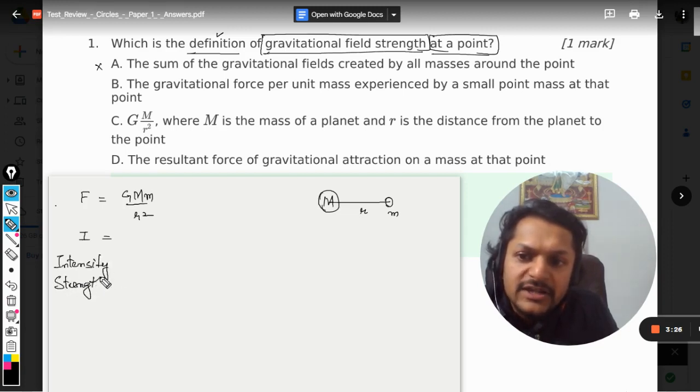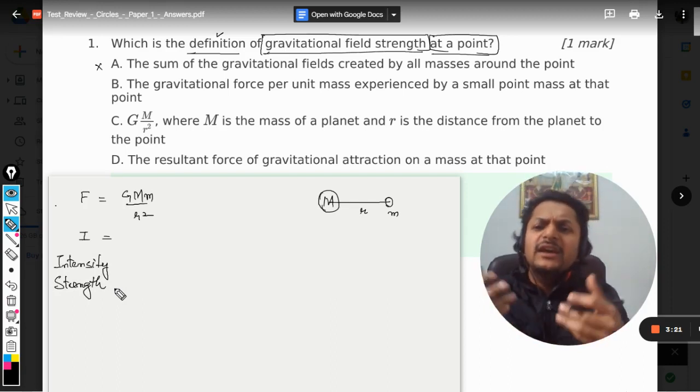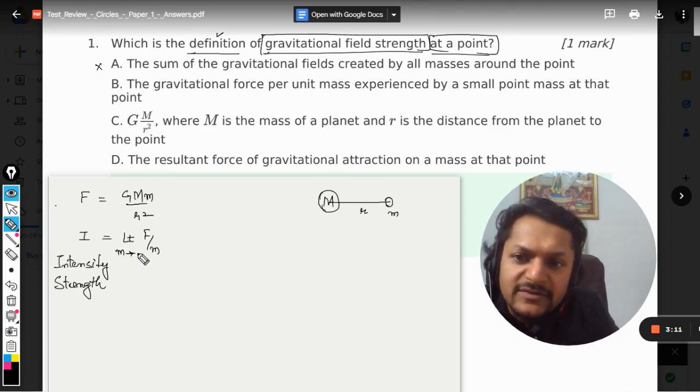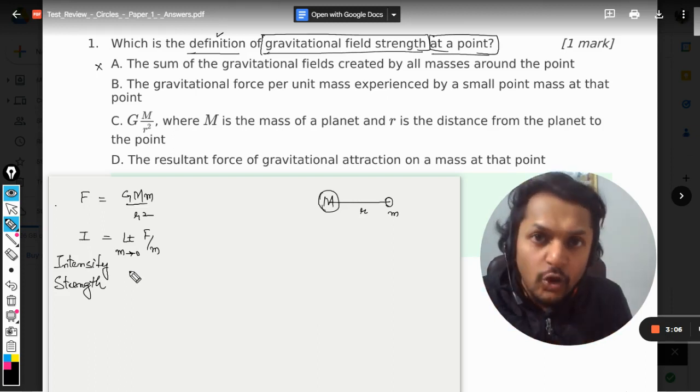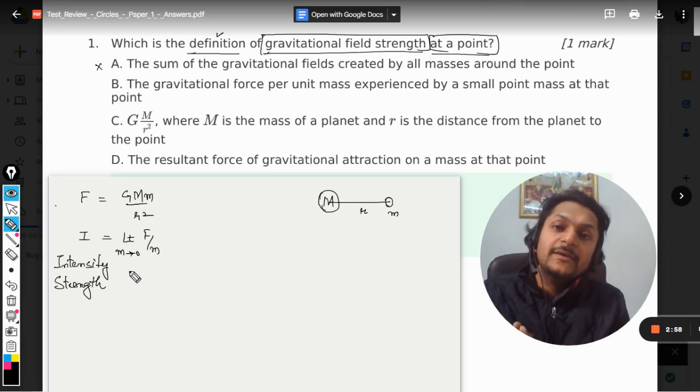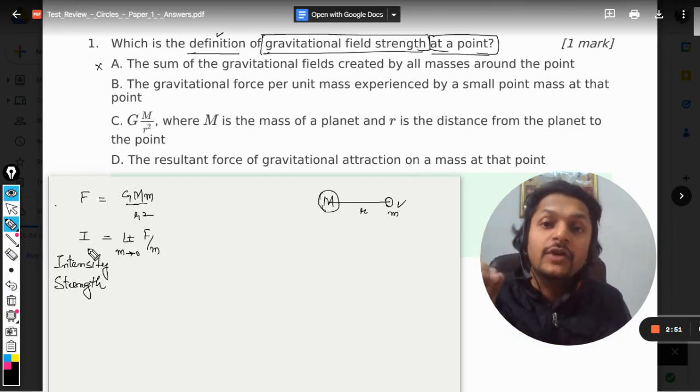And for that sake what we define is gravitational field strength, or you can call it gravitational field intensity. So do not get confused in the words. Some books say the gravitational field strength, some say gravitational field intensity, and both of them are defined as the gravitational force per unit mass. And there is a limit on it that mass is very small limit. The students those who have chosen mathematics they know what limit is.